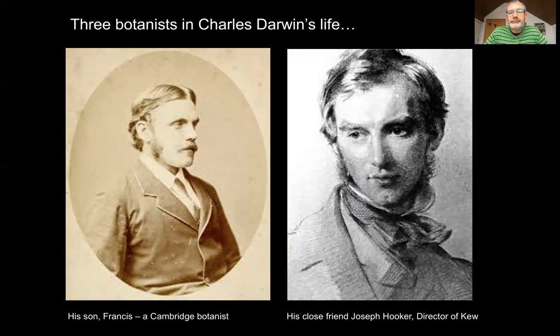Darwin was influenced by at least three people who were botanists. Perhaps the most intimate collaboration was with his son Francis. Darwin worked directly with Francis at Down House, and they jointly published one of his six books on plants. Francis was to become a botanist — a professor of botany at the University of Cambridge, where Darwin himself had studied. So there was a very important collaboration that developed between Darwin and his son while they were at Down House.